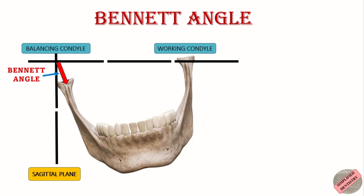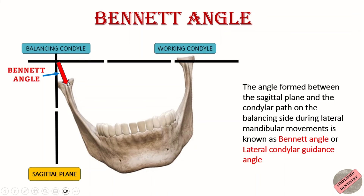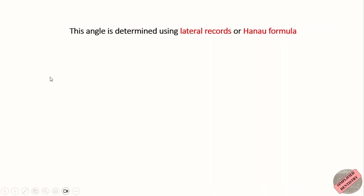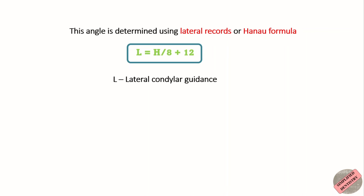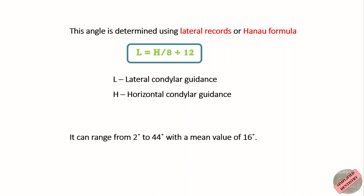The angle formed between the sagittal plane and the condylar path on the balancing side during lateral mandibular movements is known as Bennett Angle or lateral condylar guidance angle. This angle is determined using lateral records or using Henault's formula: L = H/8 + 12, where L stands for lateral condylar guidance and H stands for horizontal condylar guidance. Condylar guidance is described as the mandibular guidance generated by the condyle and articular disc traversing the contour of the glenoid fossa. This angle can range from 2 degrees to 44 degrees with a mean value of 16 degrees.